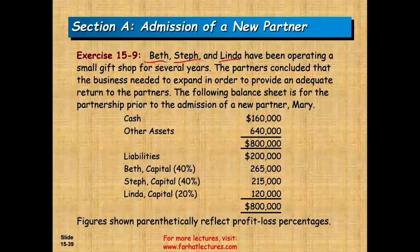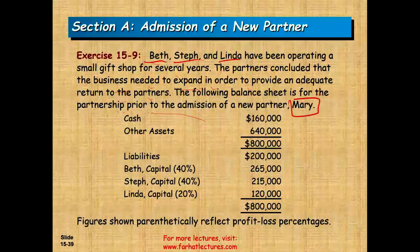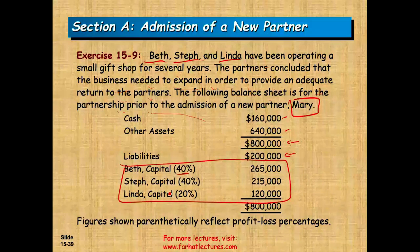Now a more detailed example. Beth, Steph, and Linda have been operating a small gift shop for several years. They need to expand and have decided to admit a new partner, Mary. Their current balance sheet shows cash of $160,000, other assets of $640,000, total assets of $800,000, liabilities of $200,000, and total capital of $600,000. Beth owns 40%, Steph owns 40%, and Linda owns 20%.